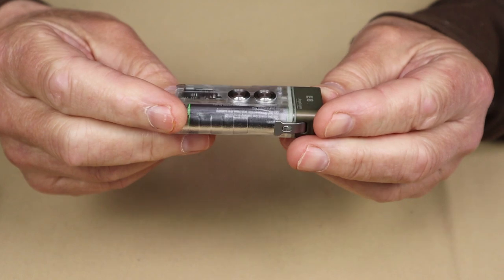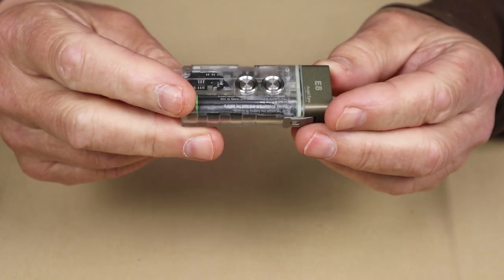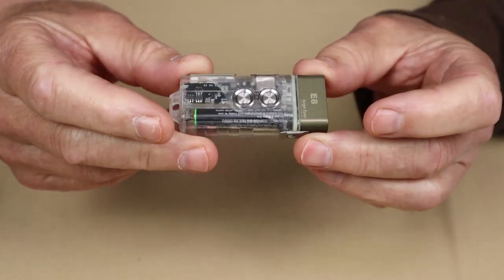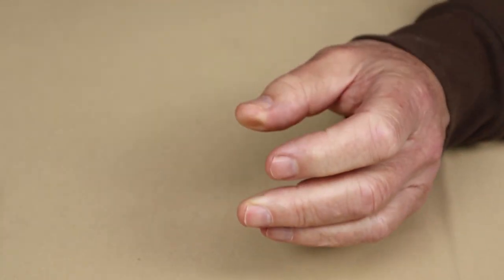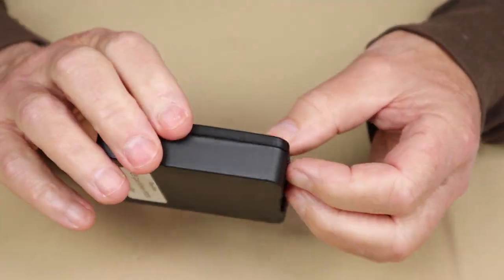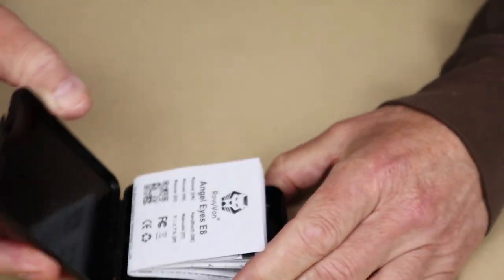Just before we take a closer look at the Angel Eyes E8 Keychain Flashlight, I thought I'd share with you what it came with. So this is the box that the light came in, just a nice small plastic storage box. Inside are just a few things.